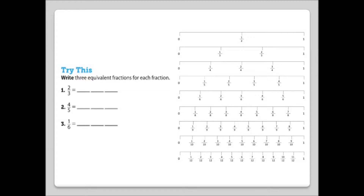Number 1: find an equivalent fraction to two-thirds. Four-sixths is an equivalent fraction to two-thirds. Number 2: find an equivalent fraction to four-fifths. Eight-tenths is an equivalent fraction to four-fifths. Number 3: find an equivalent fraction to one-sixth. Two-twelfths is an equivalent fraction to one-sixth.